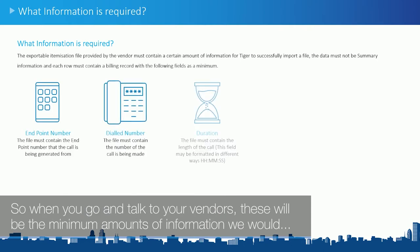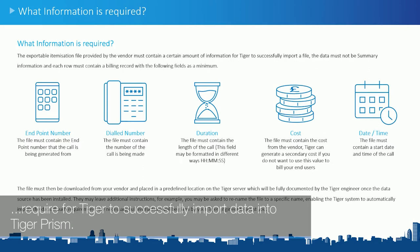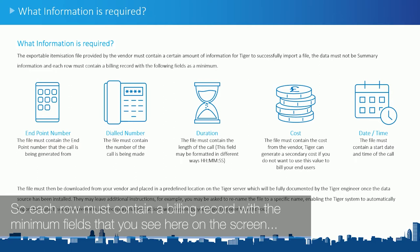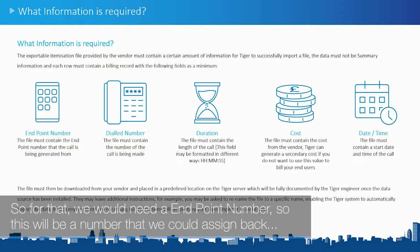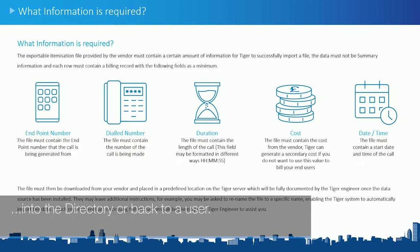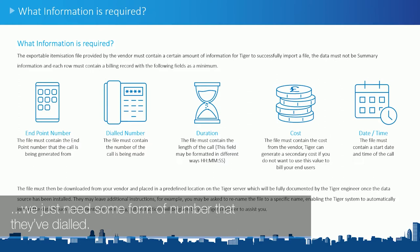So, what information is required? When you go and talk to your vendors, these will be the minimum amounts of information we would require for Tiger to successfully import data into TigerPRISM. Each row must contain a billing record with the minimum fields shown. The electronic file must provide a record per call or per line of information. We would need an endpoint number — a number we can assign back to a user in the directory — and we would need to know what the person has dialed, whether that's a fax number, data, an MMS, or any other number.